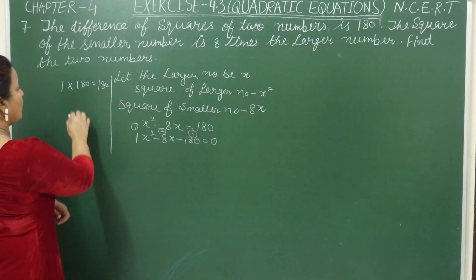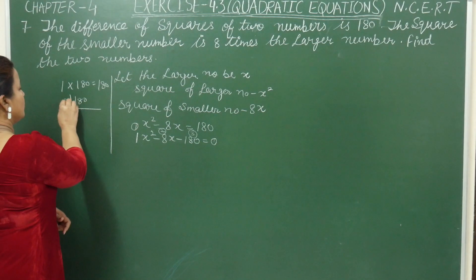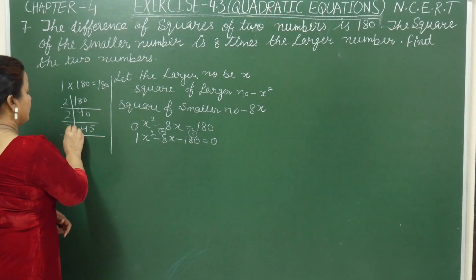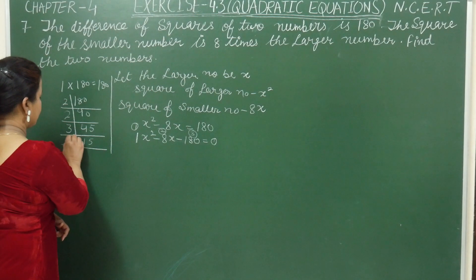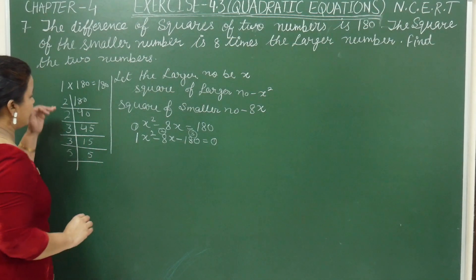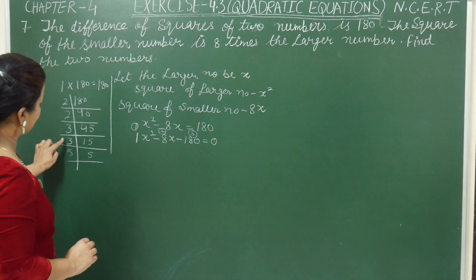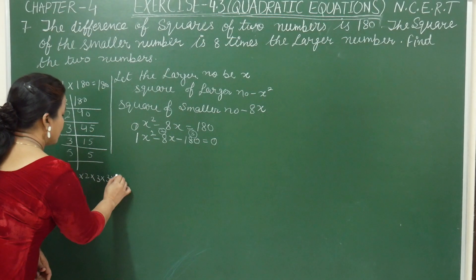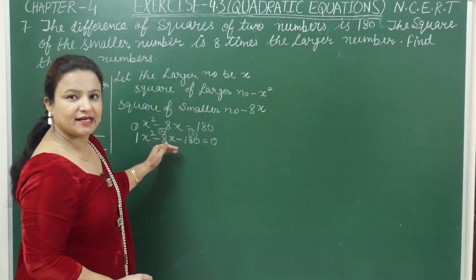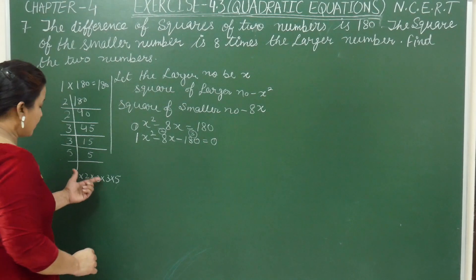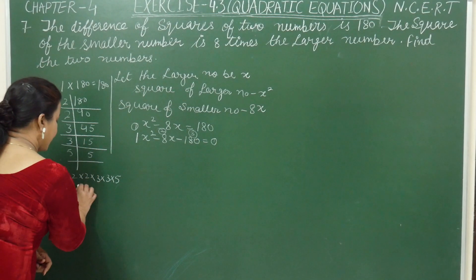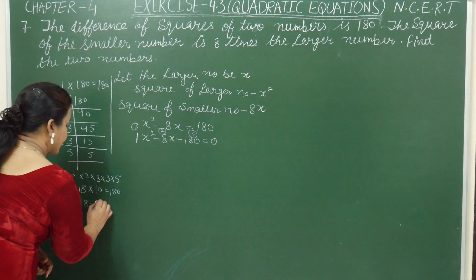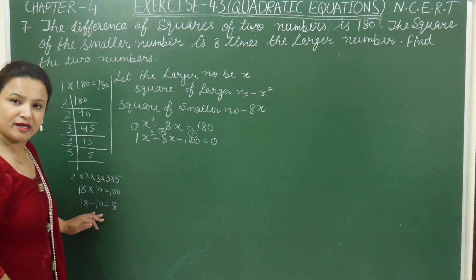Now make factors of 180. It divides by 2: 2 × 90 = 180. Again by 2: 2 × 45 = 90. Then by 3: 3 × 15 = 45. Then again by 3: 3 × 5 = 15. So 180 = 2 × 2 × 3 × 3 × 5. The required middle term is 8. We split as 18 and 10, since 18 × 10 = 180 and 18 − 10 = 8. These are the required numbers for middle term splitting.